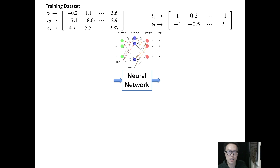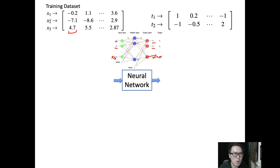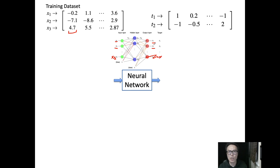This is the training dataset. Assume we have a three-input neural network that gives two outputs — a general structure of D inputs and C outputs. For three inputs we have X1, X2, and X3, and for two outputs we have Z1 and Z2. This is sample one, or pattern one: when X1, X2, X3 take values minus 0.2, minus 7.1, and 4.7, we fit these values into the neural network with the corresponding W values and activation function, and obtain outputs Z1 and Z2.